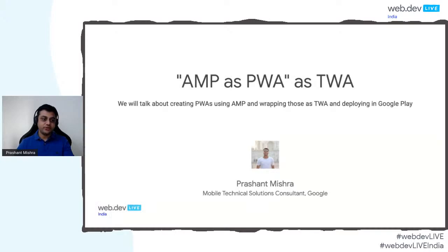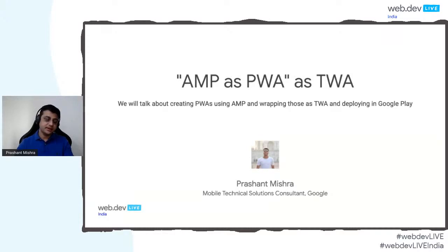We will be introducing most of these terminologies. Basically, the idea of this talk is that we write code once using AMP, which is Accelerated Mobile Platform, and thereafter we add the PWA in something called a service worker. We will be covering these in detail in the following slides. Then we can eventually wrap up that code using a special activity called Trusted Web Activity, get an APK out of it, and deploy it on Google Play. So as opposed to traditional development, we are probably writing much lesser code.